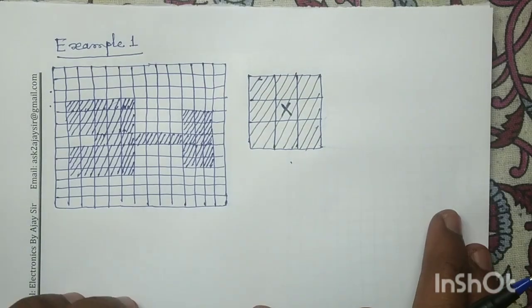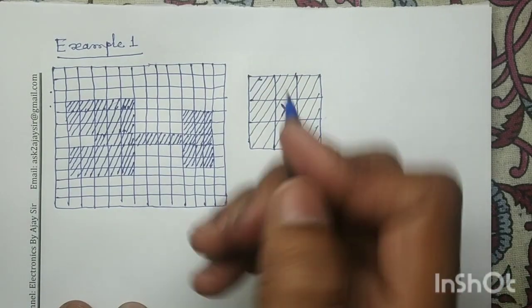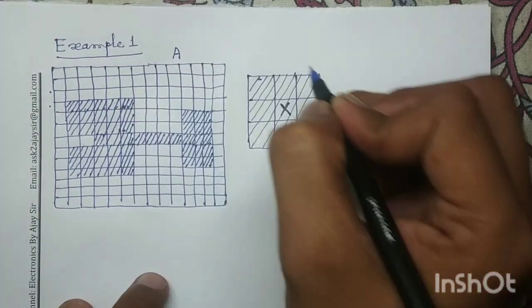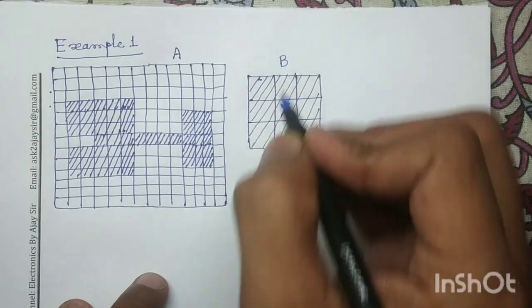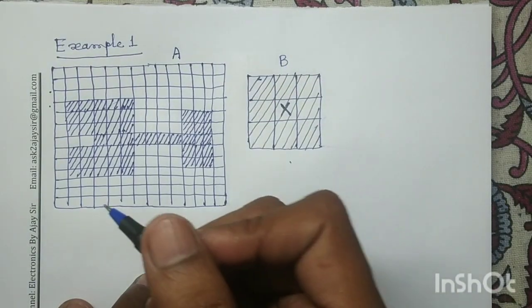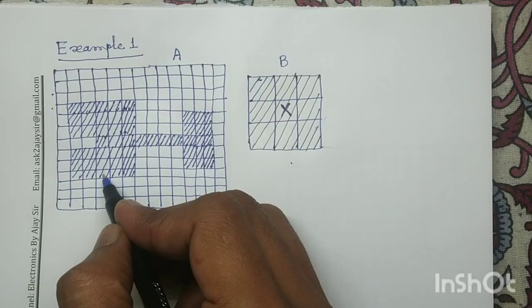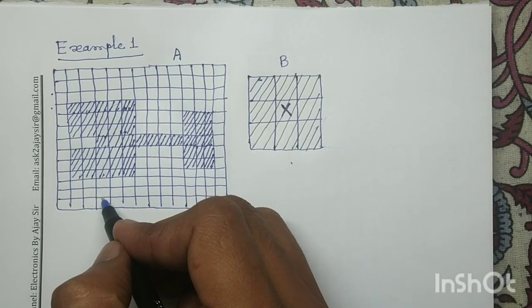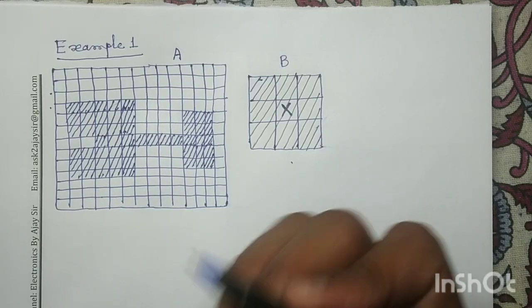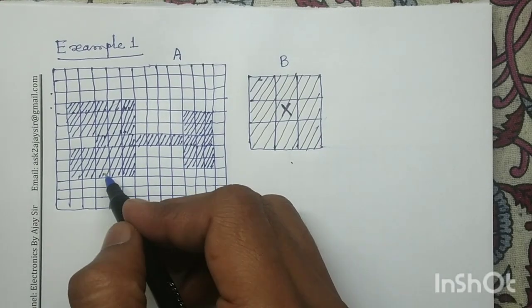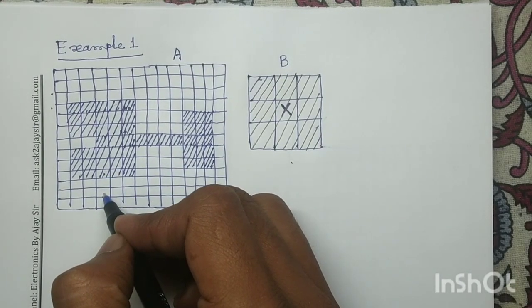Look at example 1. This is my input image A and this is my structuring element B. Considering the shaded portion, it is part of the object pixels, and the unshaded portion is part of the background pixels. The shaded portion is logic 1 and the unshaded portion is logic 0.